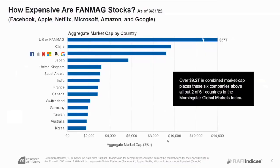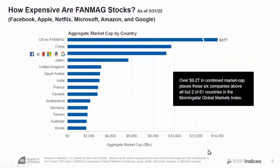They have moats — so did the top five of every past cycle. The essence of disruption is finding that the moats don't matter. Disruptors get disrupted. The FAN mags' aggregate value as of the end of March was just over $9 trillion. To put that in context: you could buy the entire publicly traded Chinese economy for $9.5 trillion, Japan for $5.5 trillion, or the three largest economies in Europe for less than the value of these six companies.